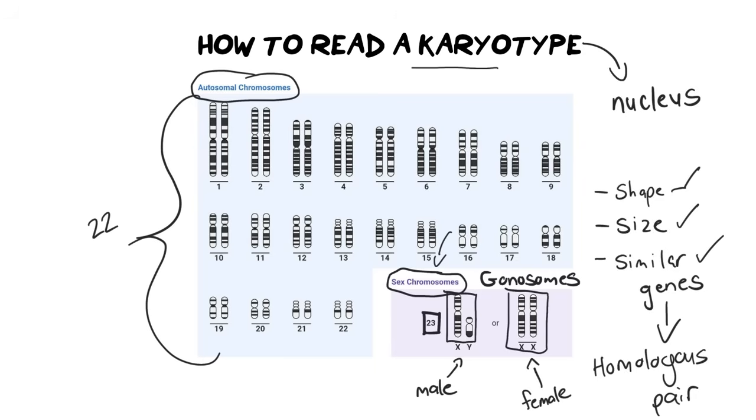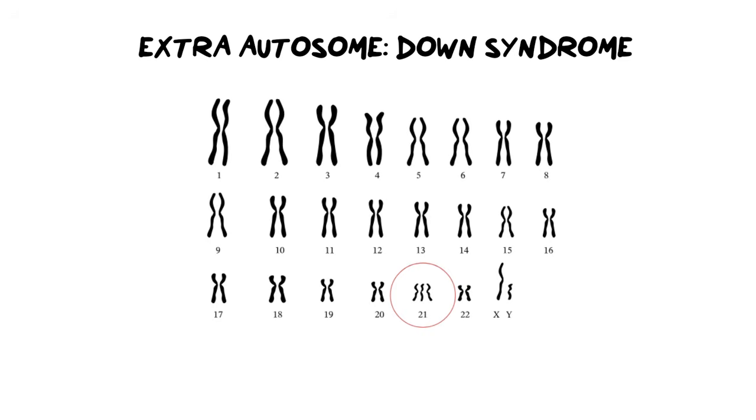Now what I want to look at is what happens when meiosis doesn't go right, and you have abnormal meiosis and what we call non-disjunction, how that affects your karyotype, how to read the karyotype, and what to look for when it comes to different syndromes. According to our exam guidelines, we need to be able to identify and describe a very specific karyotype, which is a karyotype showing Down syndrome.